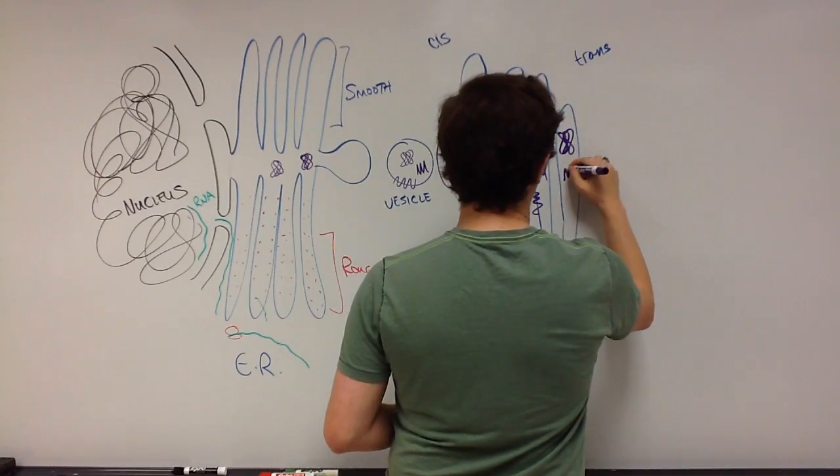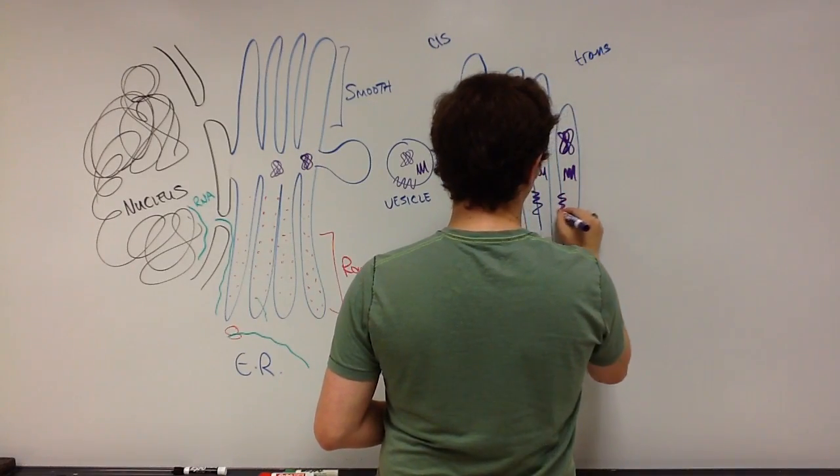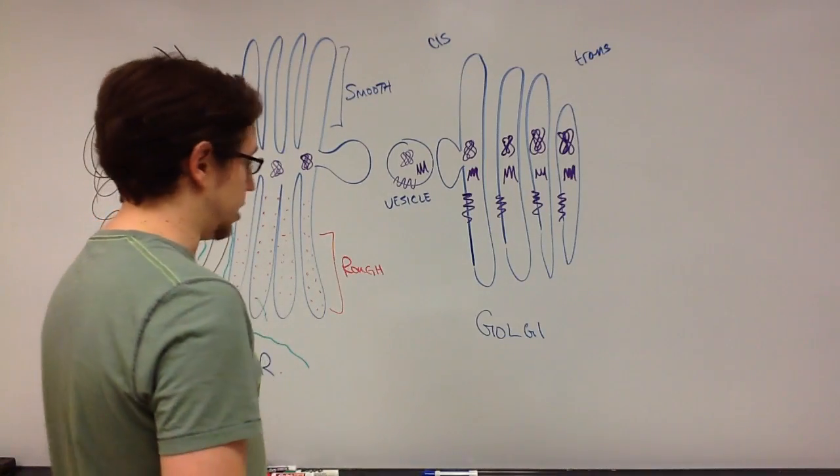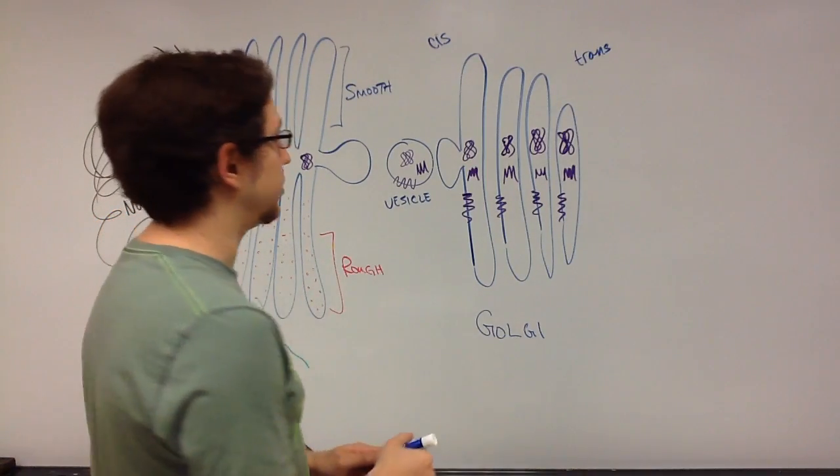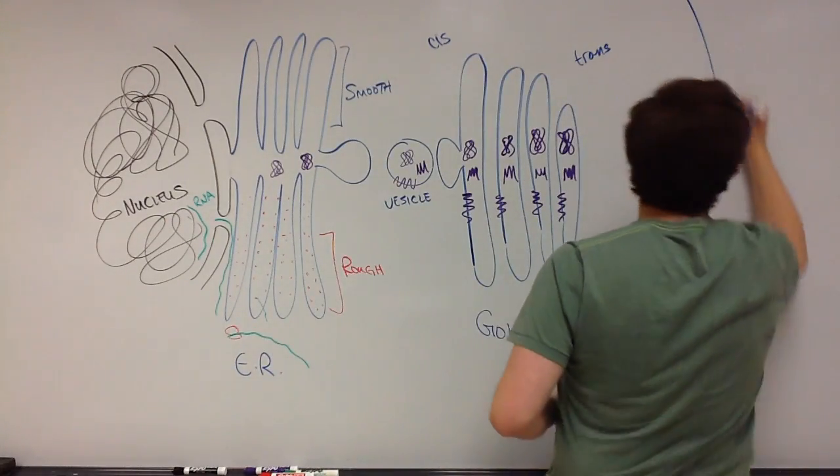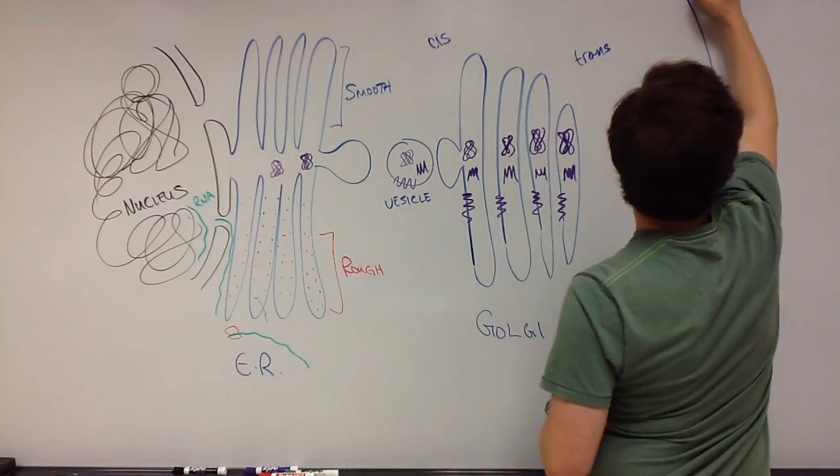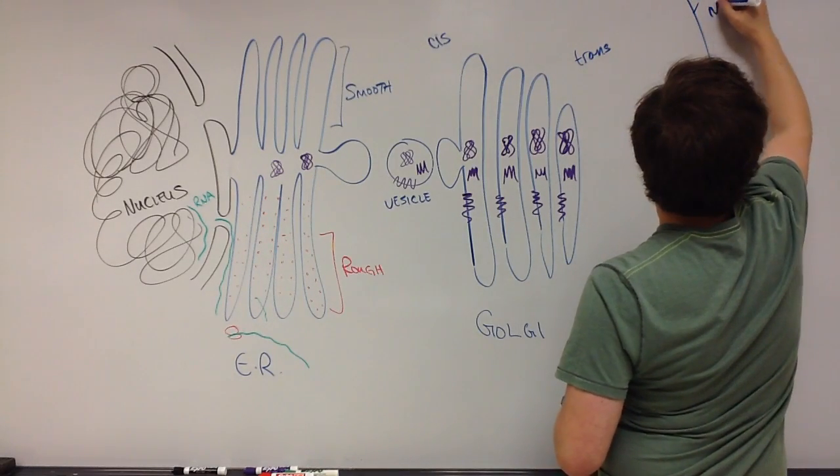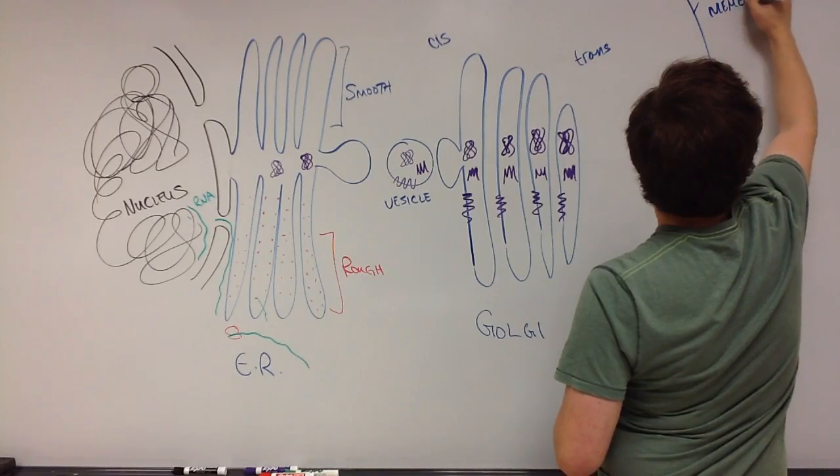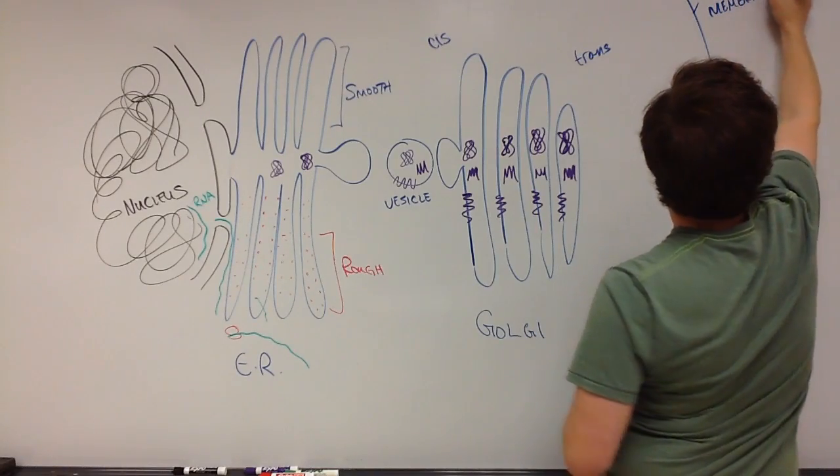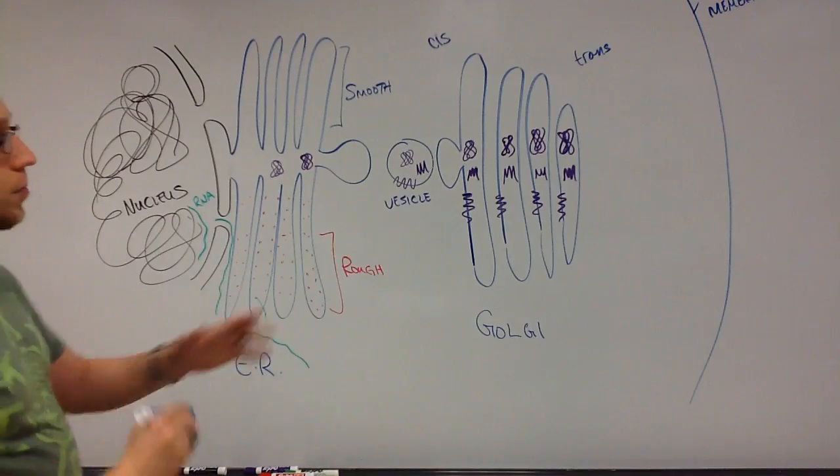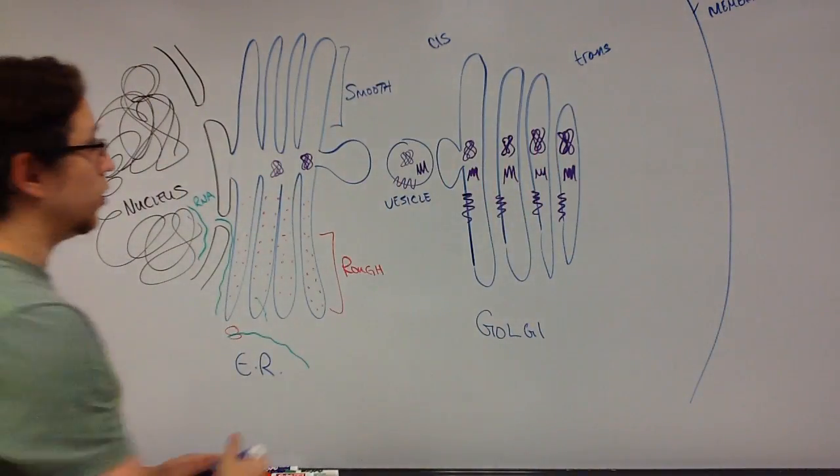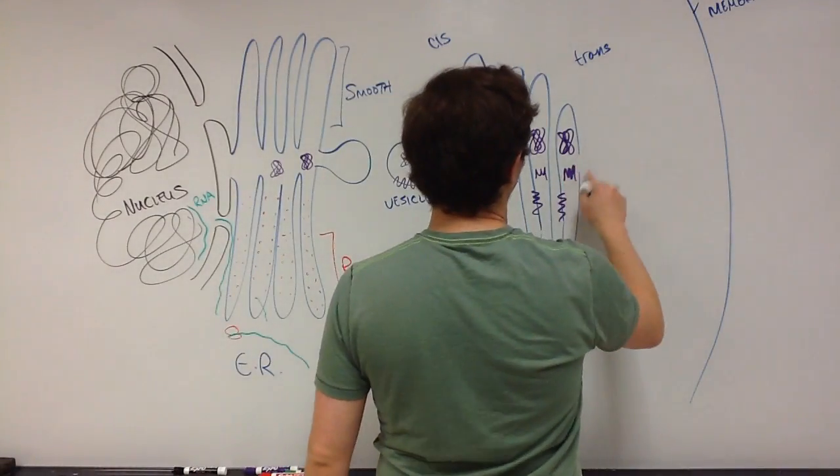We finally wind up with our modified polypeptides and we're ready to finally ship those out to wherever they're going to be used inside or outside of the cell. The final component of the endomembrane system of course here is the plasma membrane and everything outside of this plasma membrane represents the exterior of the cell. We're again going to have another vesicle pinch off.